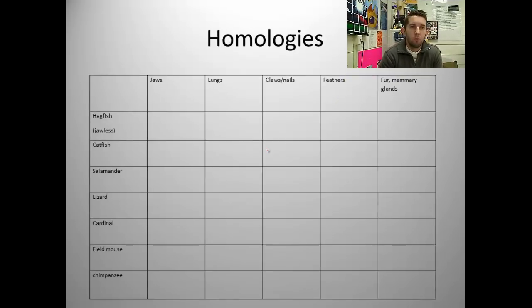Here is a group of organisms along here, and along the top these are our traits, our homologies we're going to be working with. I'd like you to hit pause and try to fill this out. If the organism has that particular trait put a check, if it does not have that trait put an X. We're going to develop an idea of relatedness, shared descent, shared homologies for these organisms.